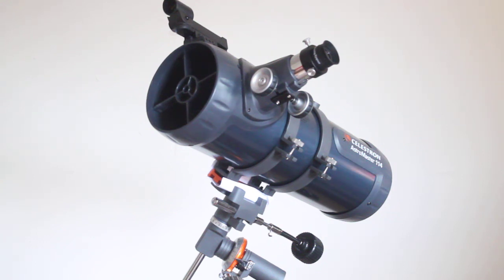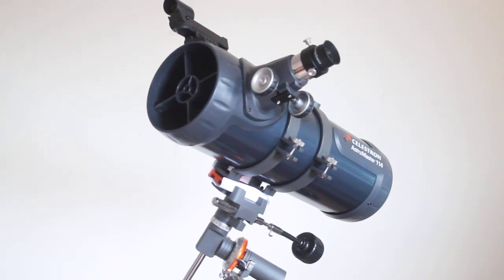So it is a very good starter scope at a sensible price point, below 200 pounds. Everything you need in the box is included, although I would advise getting the additional 25 millimeter eyepiece. I hope that helps - that's a quick look at the Celestron Astromaster 114 catadioptric Newtonian reflector. Thank you very much for watching as always, and please check out the link in the description below.